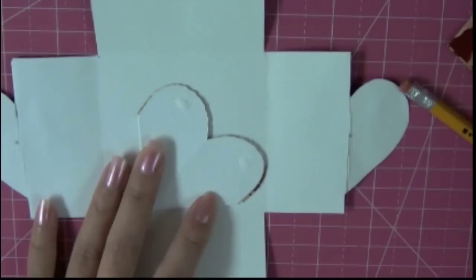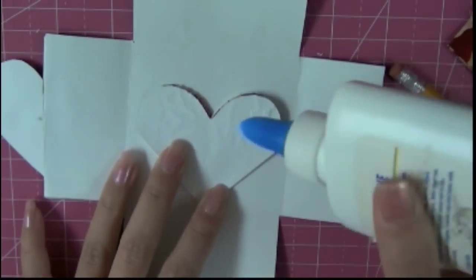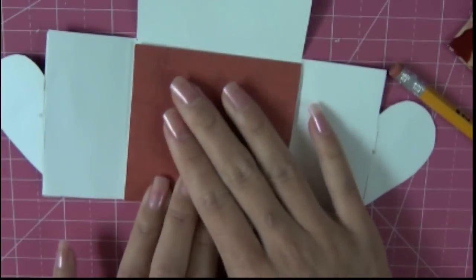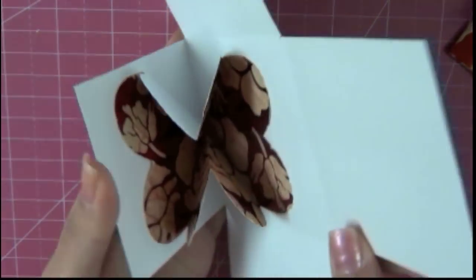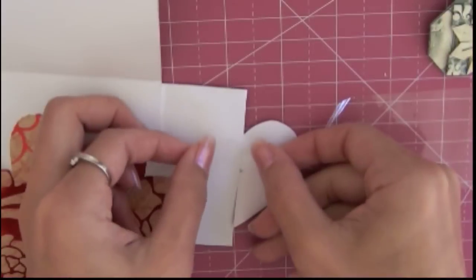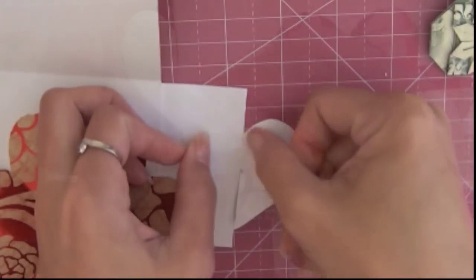Dab some glue on the tip of the heart. Place the tip of the heart along the crease line of the square. And add some more glue to the other side of the heart. I like to add a little bit of tape on the handle of both sides of the heart. This will help the handle to be stronger and it will not break off so easily.